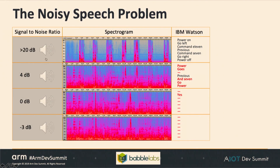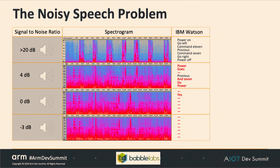Let's start with looking at the noisy speech problem, where we have a simple case — just a series of commands at different noise levels. A high signal-to-noise ratio, like this 20 dB SNR, is very clear. Let's play that clip. [audio plays: 'Previous. Command seven. Go right. Power off.'] And there I've used a state-of-the-art cloud-based speech recognition system just as a reference. In fact, IBM Watson gets all of those seven phrases exactly correct.